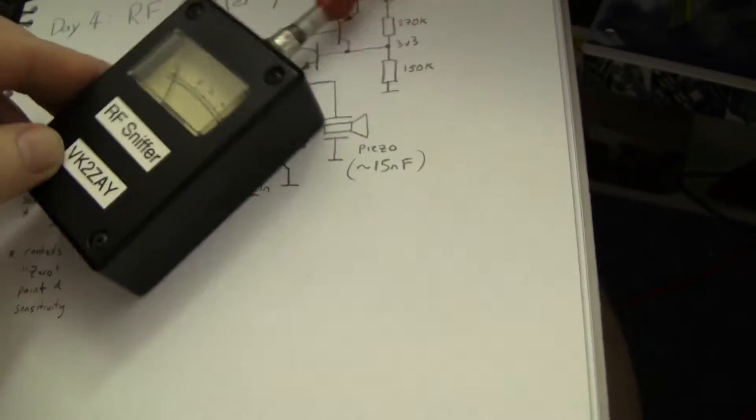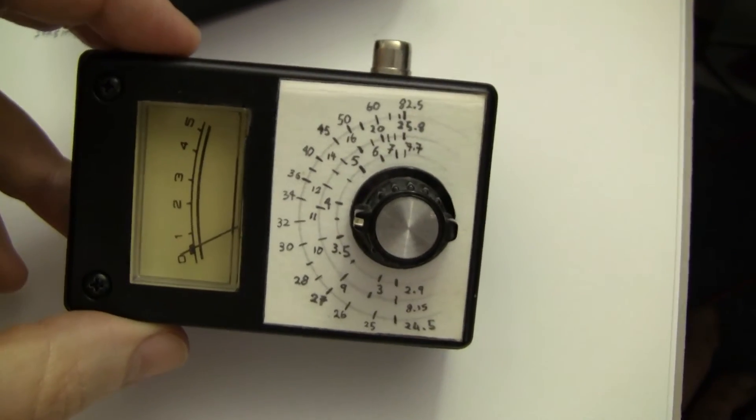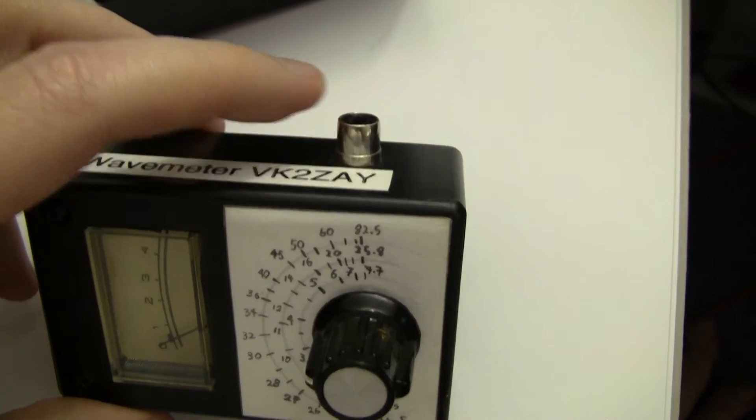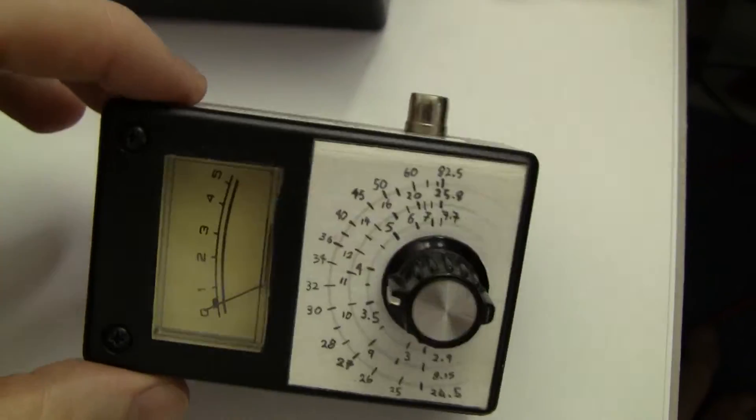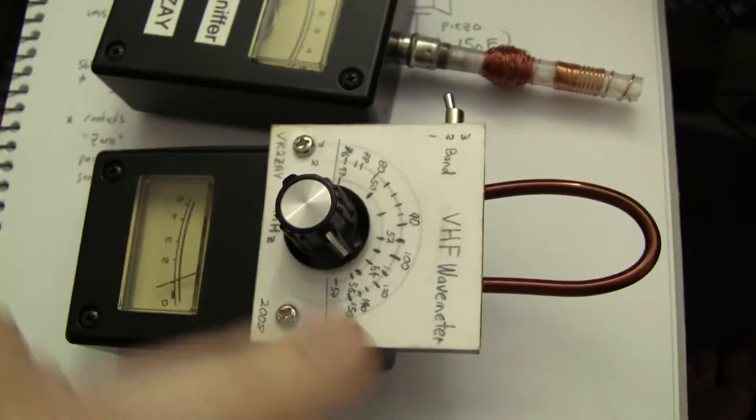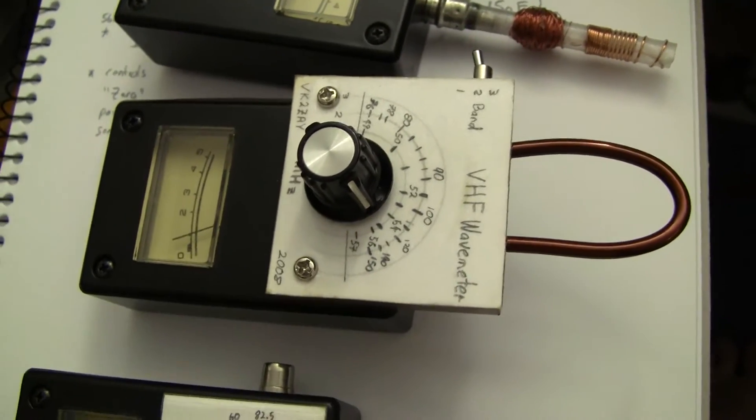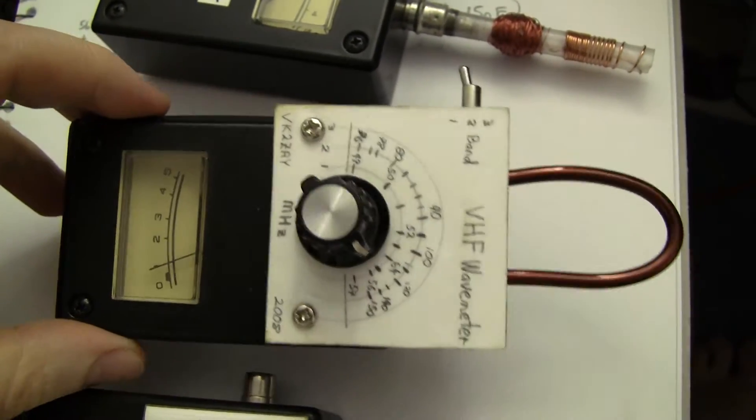Now the wave meters, you may have seen the HF version. This is the HF wave meter. It's essentially the same circuit except the coils that you plug in are tuned and have been calibrated with a signal generator. And the VHF version has got one fixed coil. It's just a big chunky piece of copper wire and it's also been calibrated.